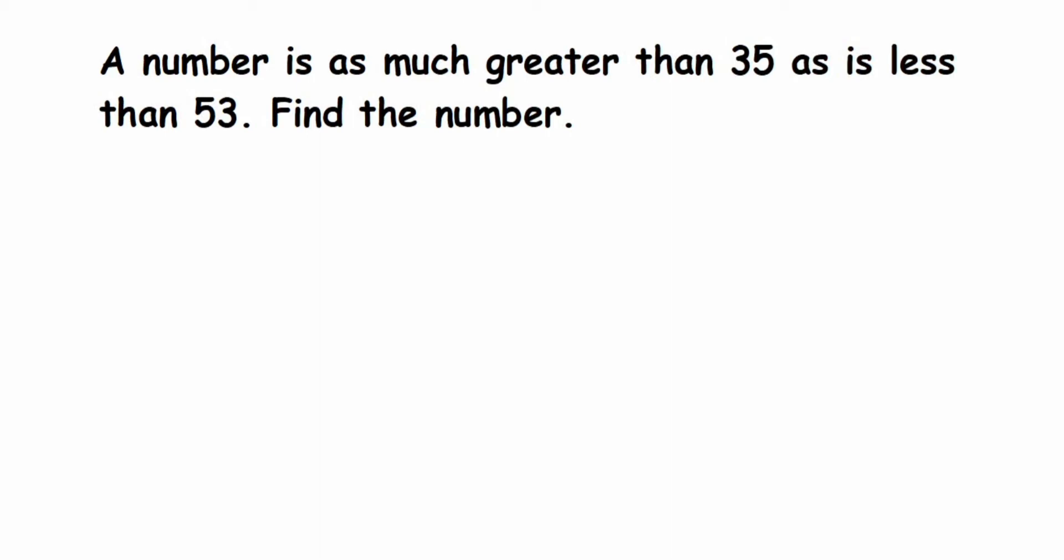Hey everyone, here's another question on linear equations. The question is: a number is as much greater than 35 as is less than 53, find the number. We don't know the number, so that is what we'll find out. In such cases, we have to always assume the number is equal to some variable.